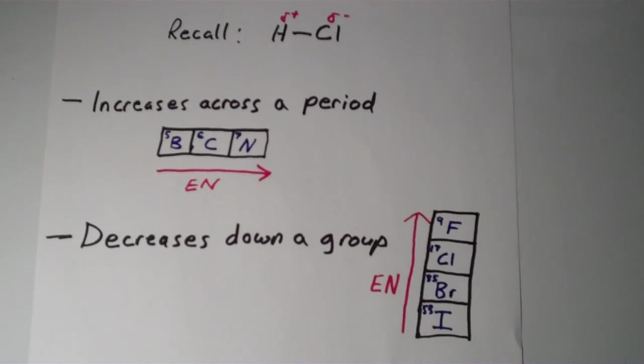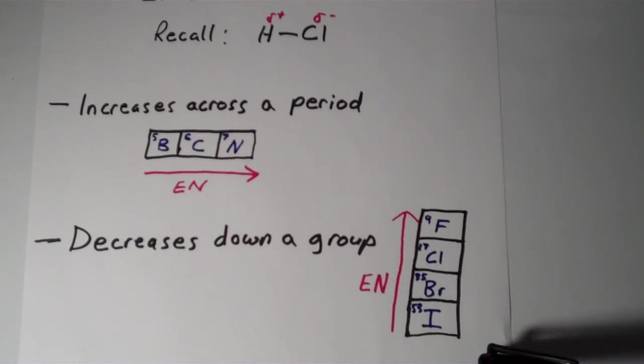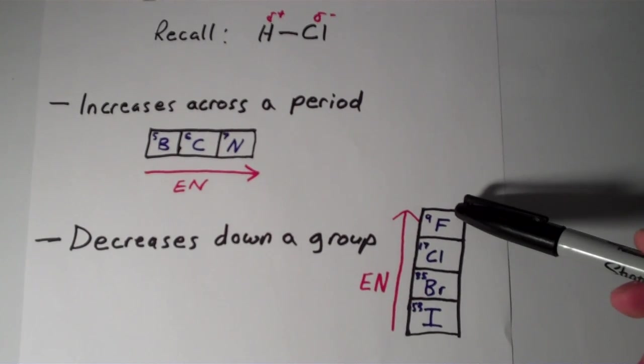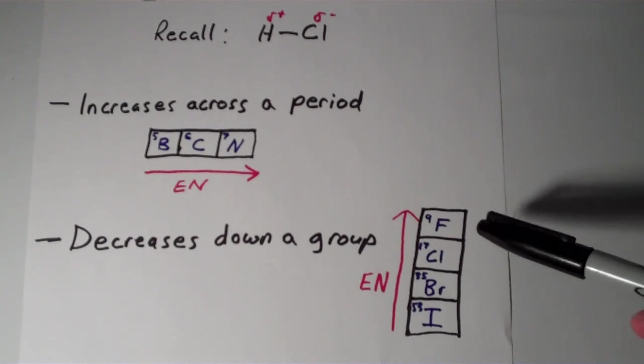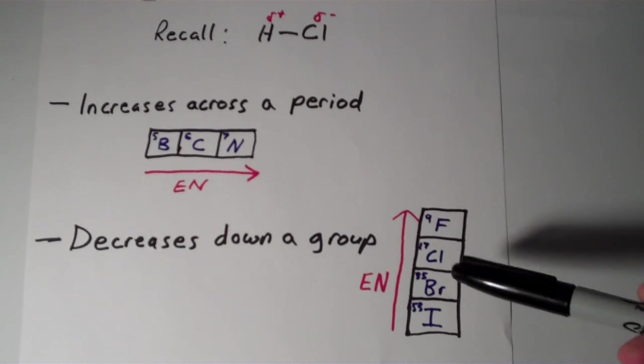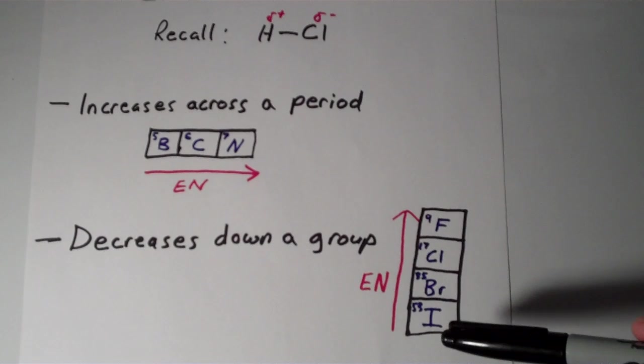Electronegativity decreases down a group in the periodic table. I've drawn the halogens here. Fluorine, that's at the top of the group, that is the most electronegative among the halogens, followed by chlorine, followed by bromine, and then lastly iodine.